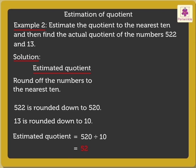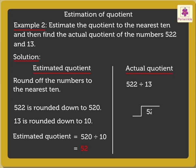Now, let us find the actual quotient. So, 522 divided by 13 gives the quotient as 40. Thus, the actual quotient is 40.